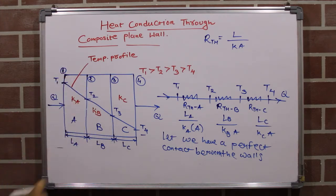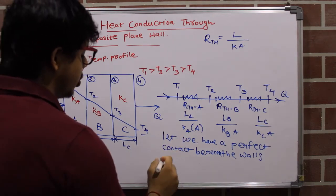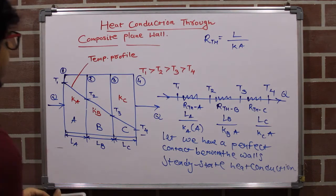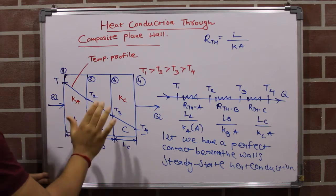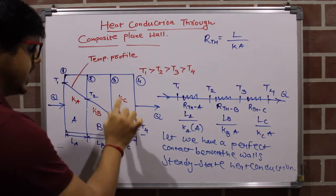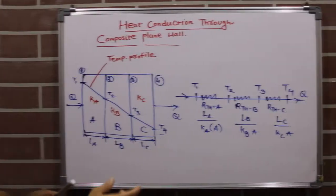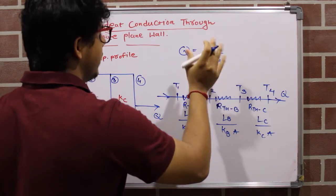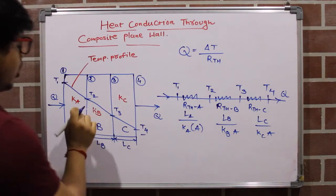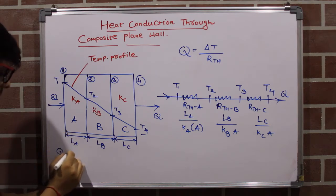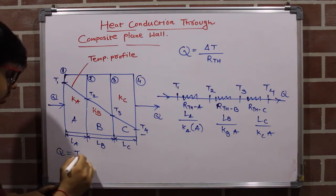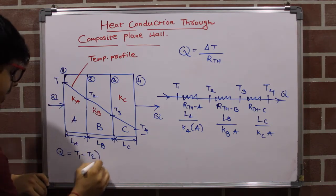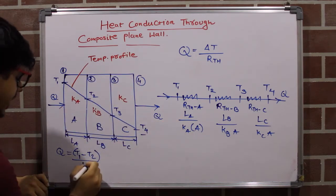We also assume steady-state heat conduction with no internal heat generation. The thermal conductivity Ka for wall A, Kb for wall B, and Kc for wall C each remain constant. From the previous video we derived Q = ΔT / Rth. Applying this to wall A: Q = (T1 − T2) / (La / (Ka·A)). This is Equation 1.